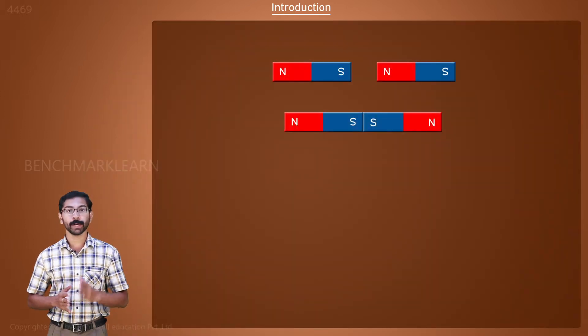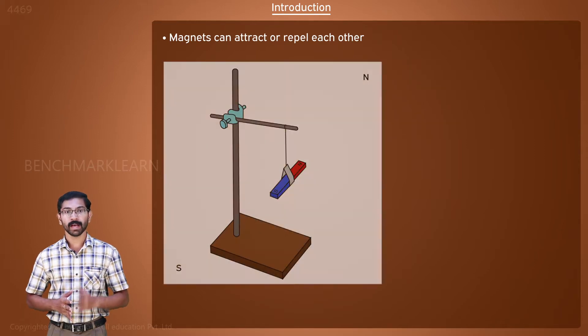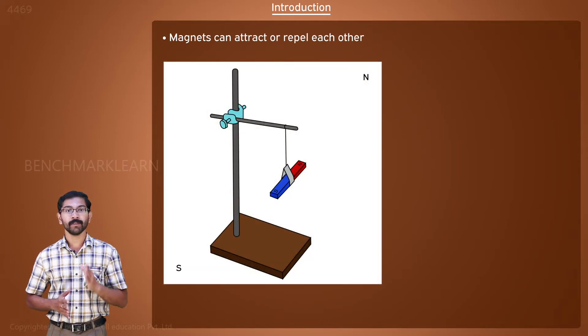Magnets attract objects made of iron or steel. Magnets can attract or repel other magnets. A freely hanging magnet will align in the north-south direction.